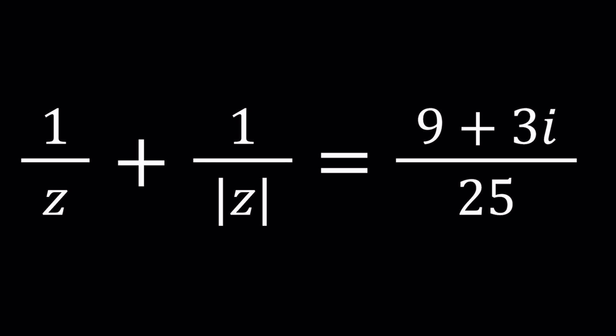What is a complex number? A complex number z can be written as A plus B I where A and B are real numbers and I is the square root of negative 1. Of course I'm talking about the principal square root because there are two square roots.